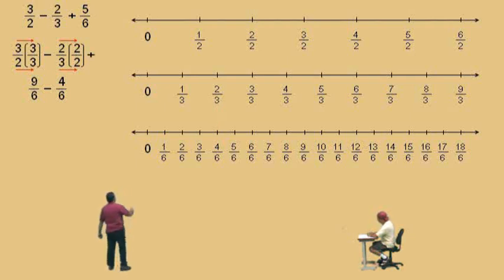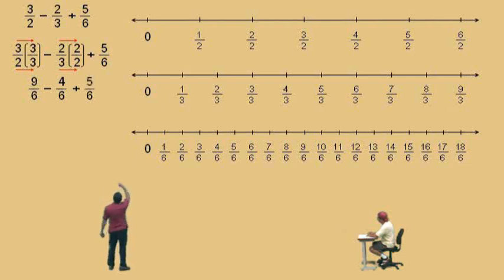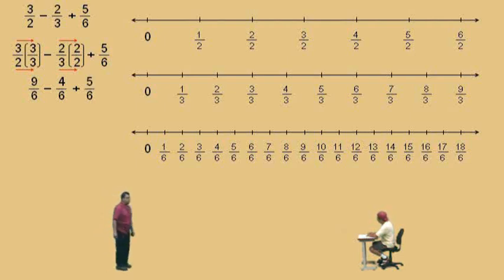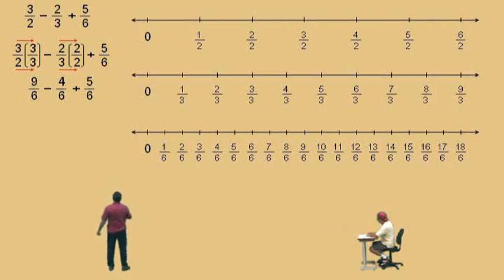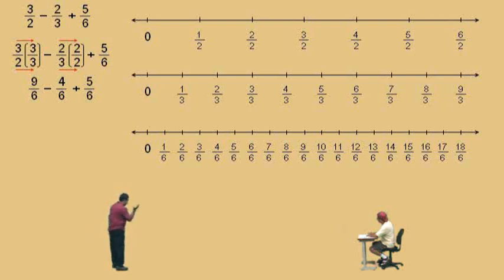Now, we have the 5 sixths — we don't need to do anything to that, because 5 sixths already has a denominator of 6, and there you go. Now notice, all our denominators are 6, and therefore we can just basically do arithmetic.